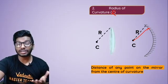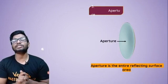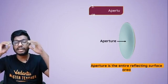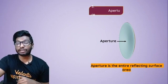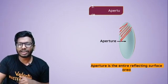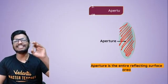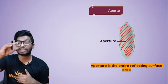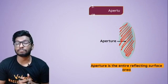The third nomenclature you have to be aware of is the aperture of the mirror. The aperture of the mirror is nothing but the surface area of the mirror where reflection can happen — whatever is the entire reflecting surface. The entire surface where reflection can happen or where it is capable of reflecting is called the aperture of a mirror. The entire surface area of the reflecting surface is called the aperture.